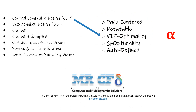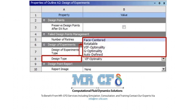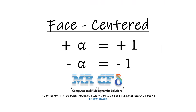After discussing the number of design drawings embedded in the central composite model or CCD, it is necessary to discuss how to determine the amount of alpha in this design model. The alpha value is determined according to the type of central composite model selected. The central composite design model has different types: face centered, rotatable, VIF optimality, G optimality, and auto-defined. This figure shows these types in the ANSYS Workbench software.